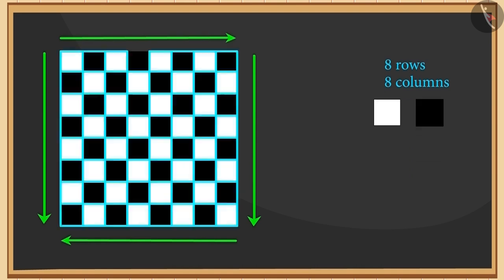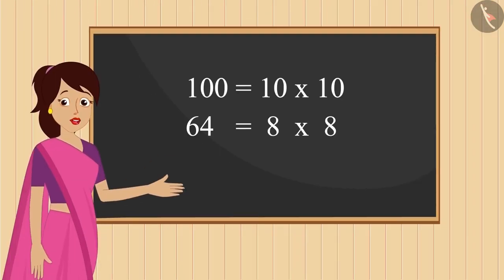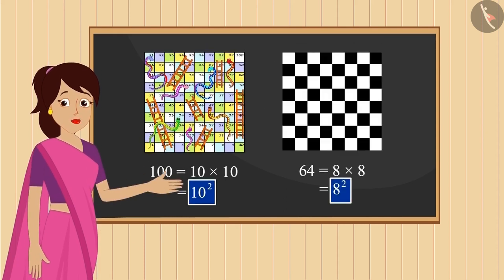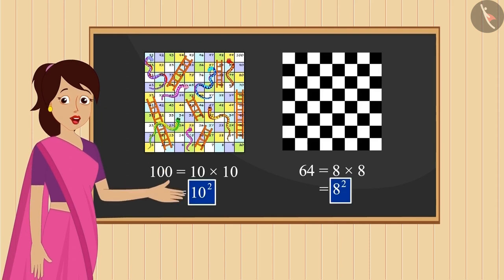So it has a total of 64 squares which are either black or white in color. Do you see any similarity between the two numbers? Yes, of course. We can write both these numbers as the square of a natural number.